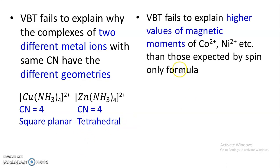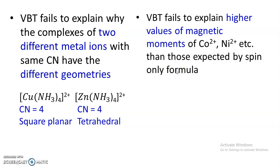Another important limitation of valence bond theory is its inability to explain the higher values of magnetic moments observed for certain transition metal ions, such as cobalt 2+ and nickel 2+. The magnetic moment values calculated by the spin-only formula are totally different from the observed magnetic moment values, and this discrepancy was not properly explained by valence bond theory.